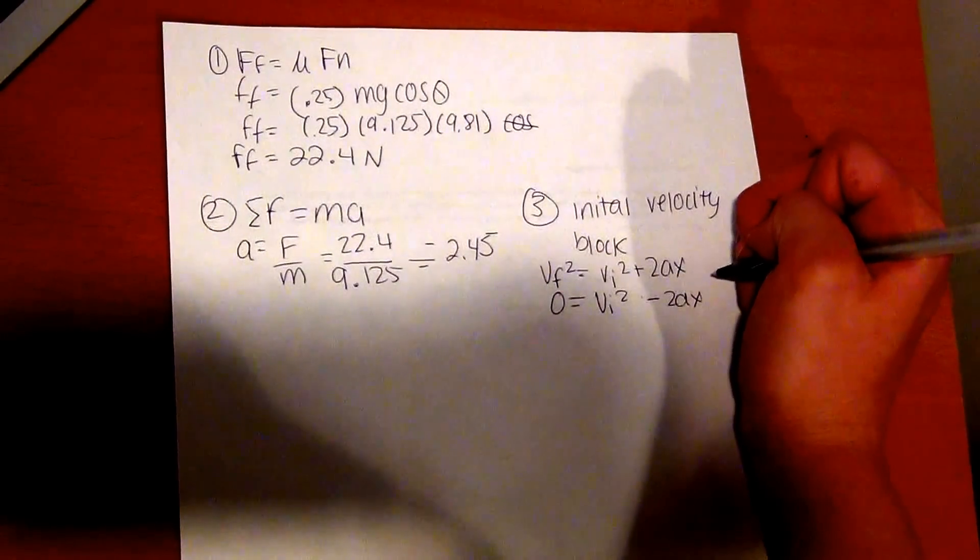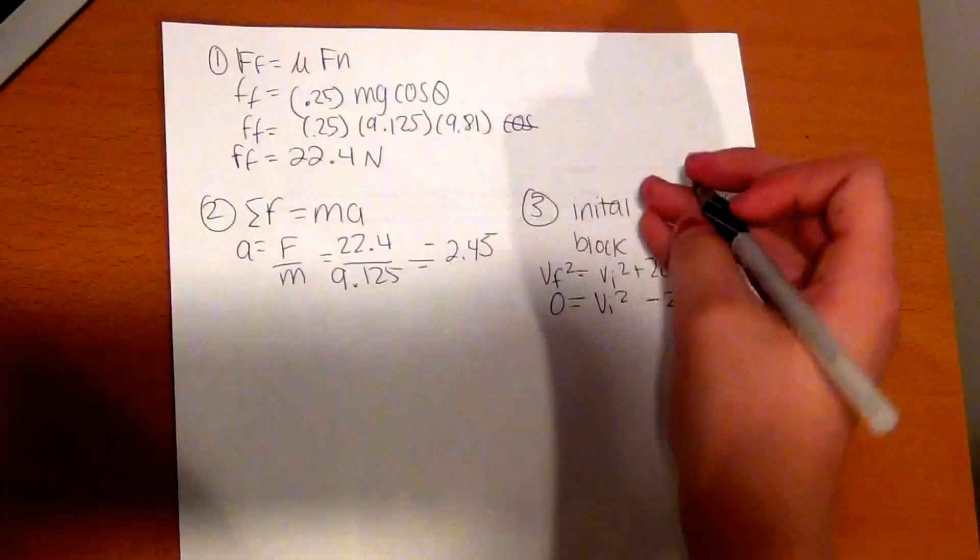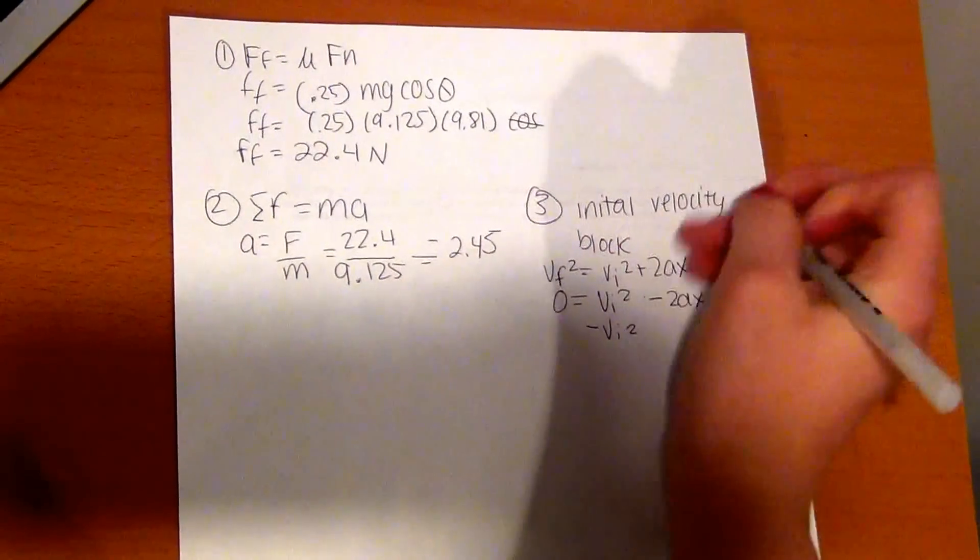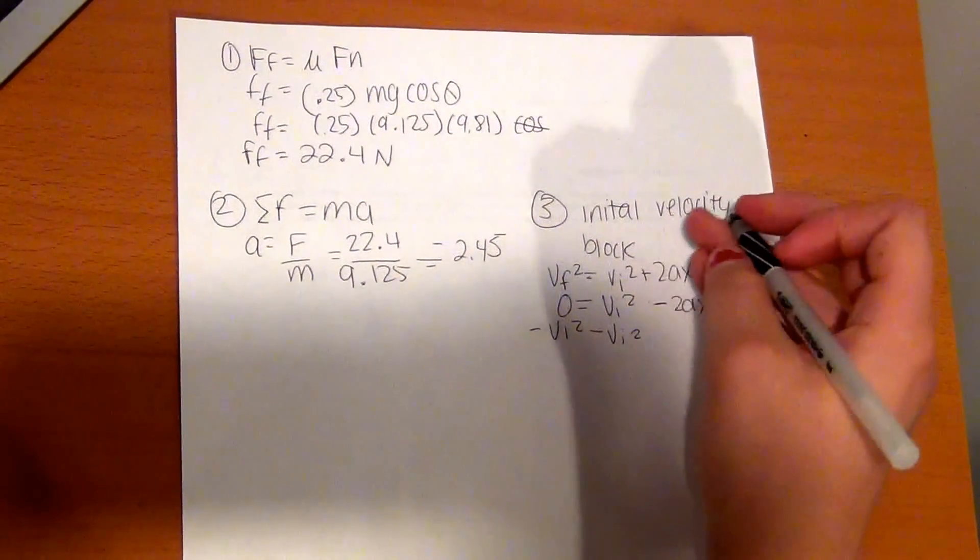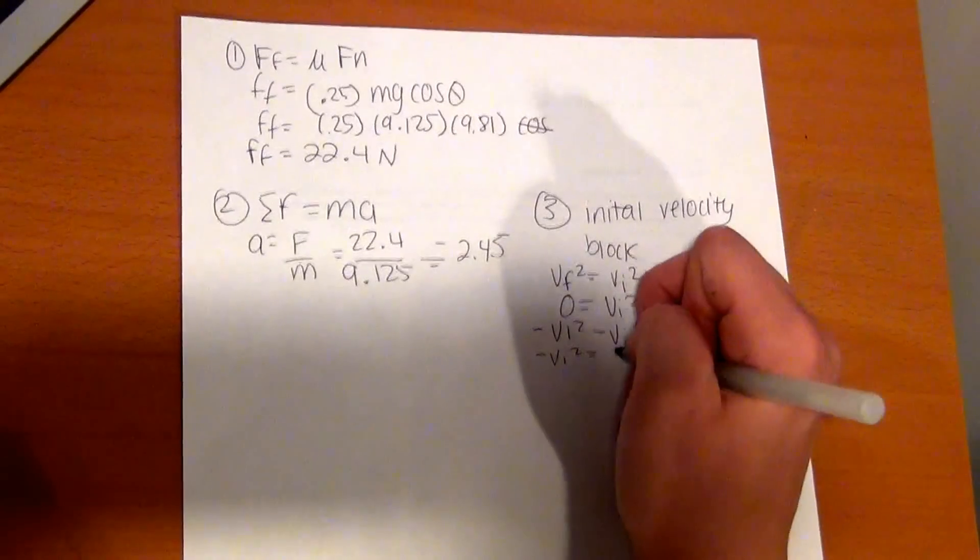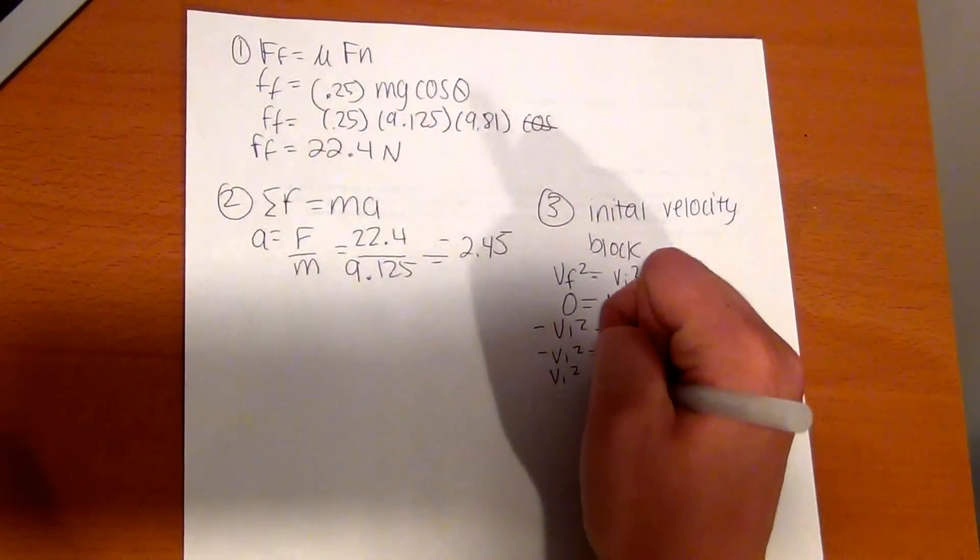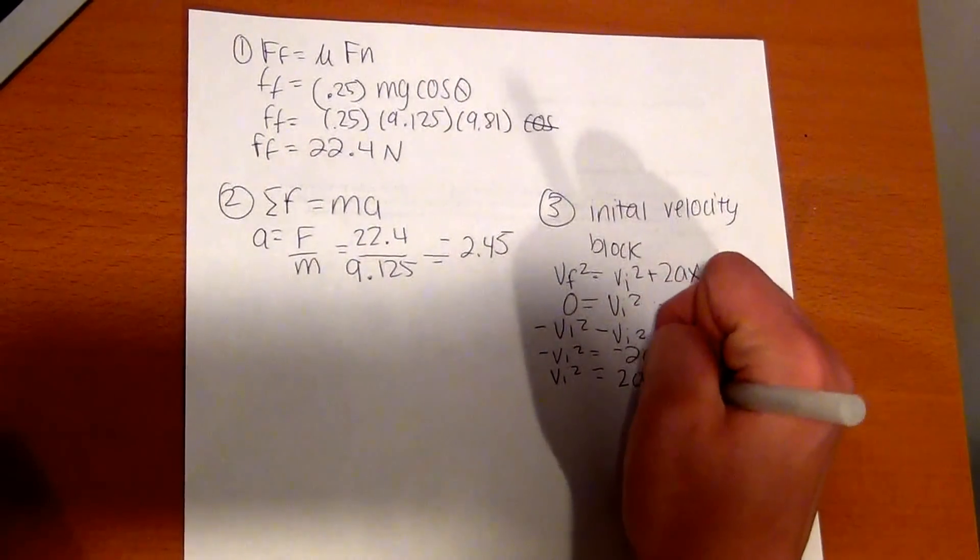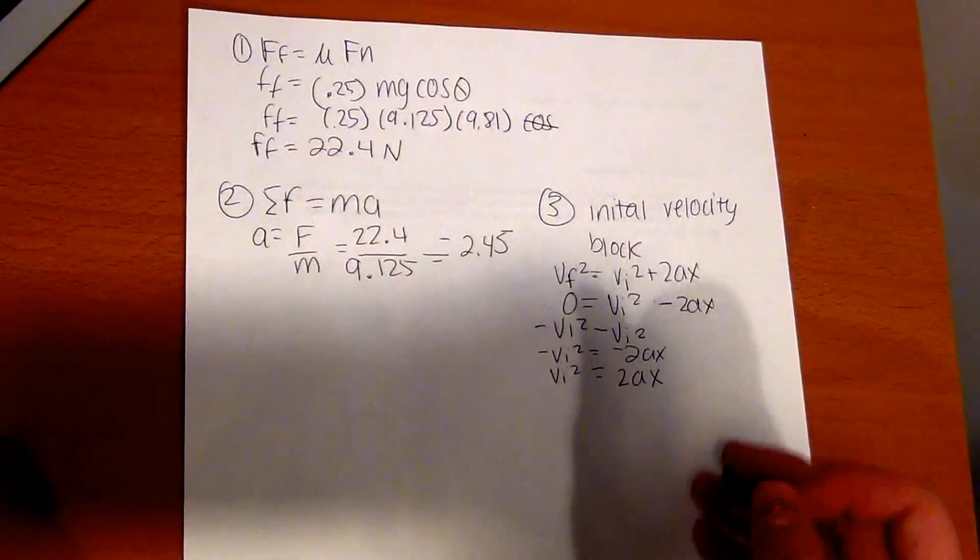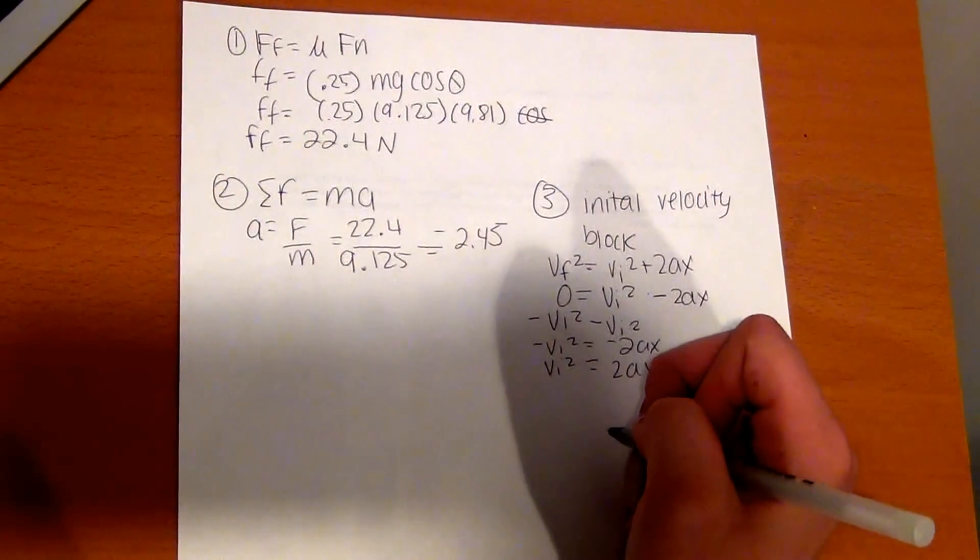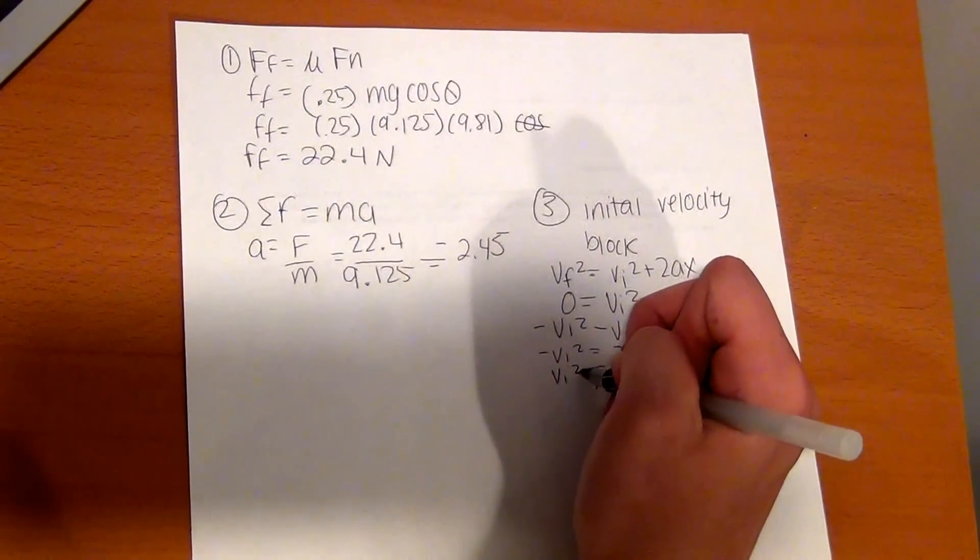We want to get the initial velocity by itself. So we'll subtract Vi squared to get it to the left side. Then negative Vi squared equals negative 2AX, which is the same thing as positive Vi squared equals positive 2AX. After that, we still have to solve more. To isolate V by itself, we want to take the square root of 2AX to get rid of Vi squared.